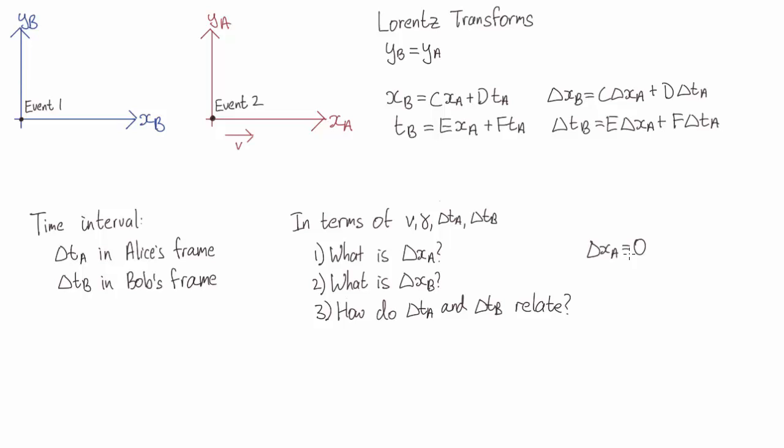So what about in Bob's coordinates? Bob measured some time delta t_b between these two events. And in that time, Alice was traveling at a speed v. So the total spacing between these two events in Bob's frame is v times delta t_b.